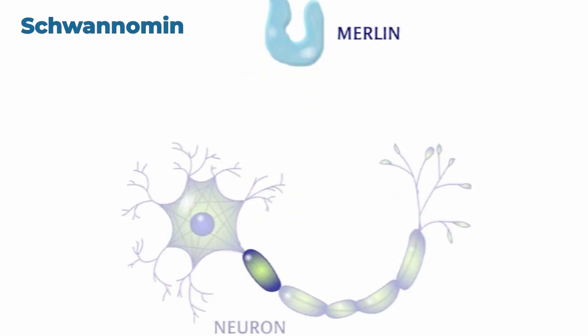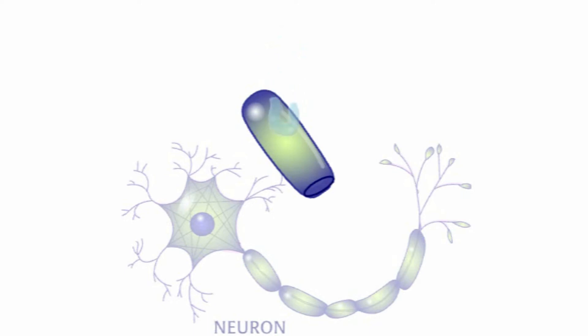Merlin is expressed in nerve cells, specifically Schwann cells, which wrap around the axons of nerve cells. NF2 is usually an adult-onset disorder. People with NF2 develop tumors of the Schwann cells around the auditory nerves.